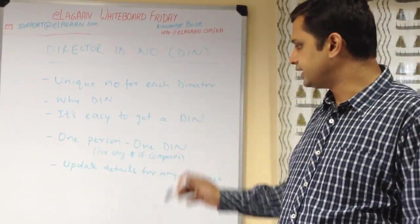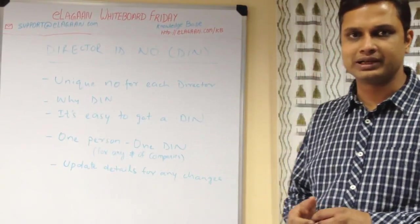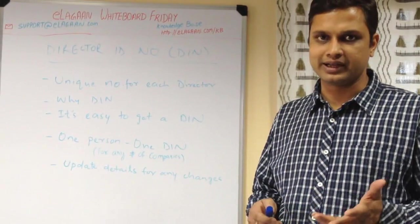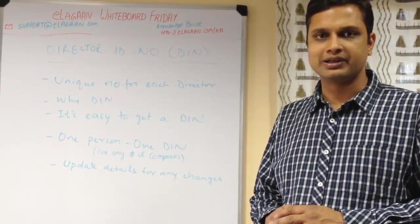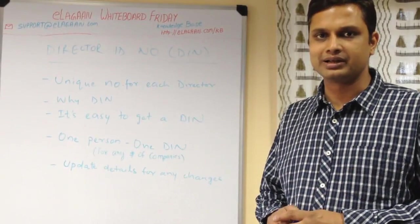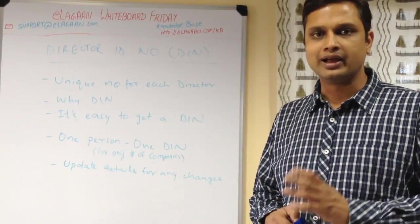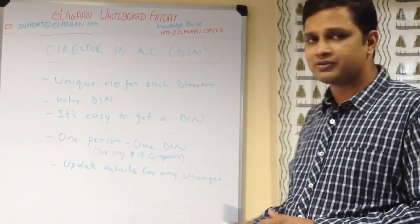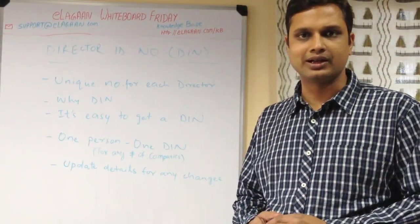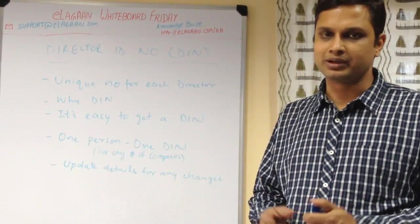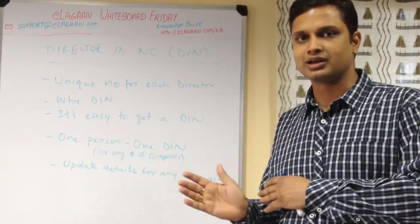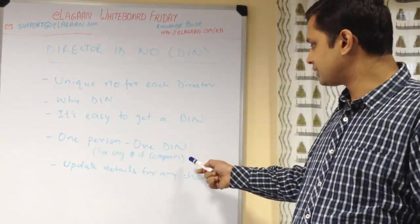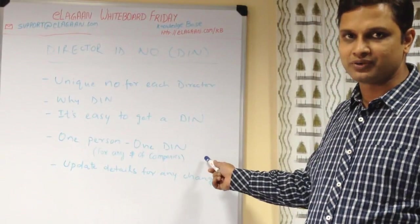One person, one DIN — this is very important since this is a unique identification number. You should not have multiple DINs. If you already have a couple of DINs, it is strongly advisable to surrender the rest and keep only one. Remember, you can be a director in any number of companies — private limited or LLP — with just one DIN, because it is a person-dependent number, not a company-dependent number.